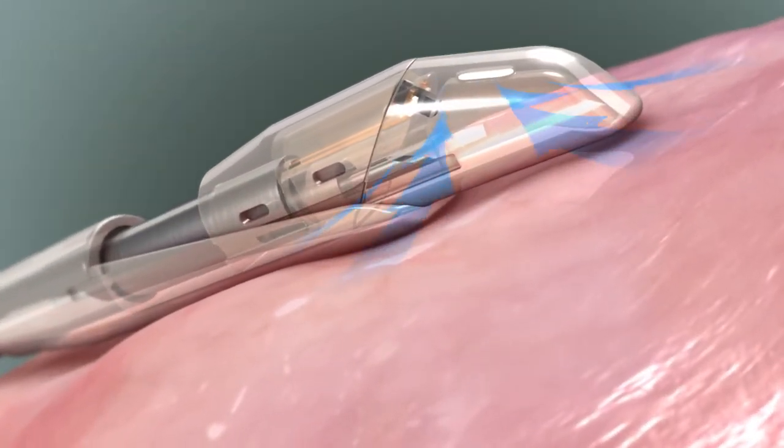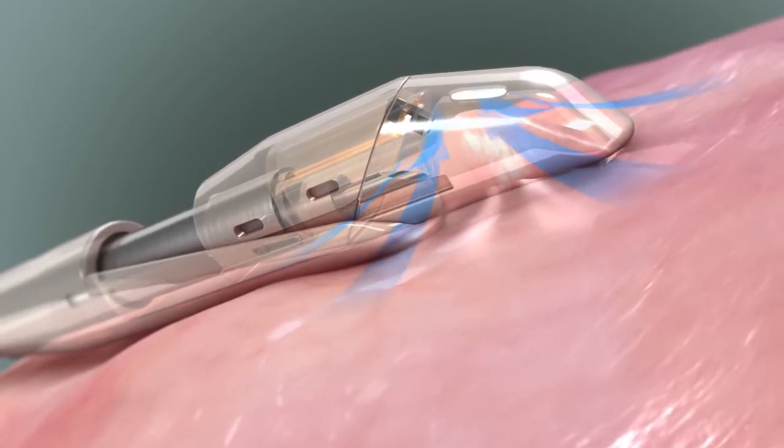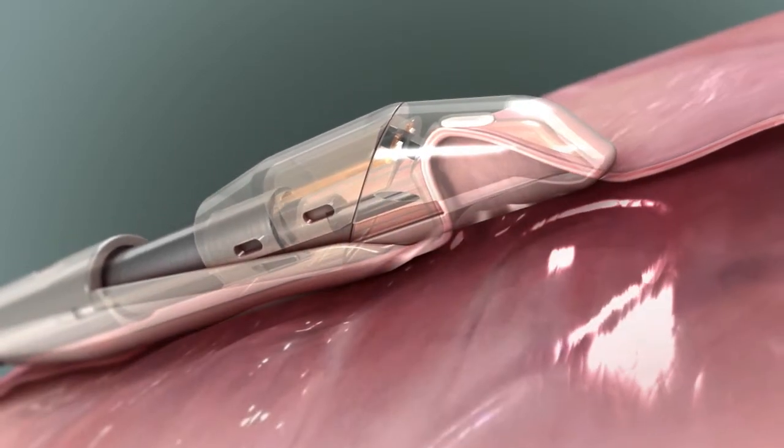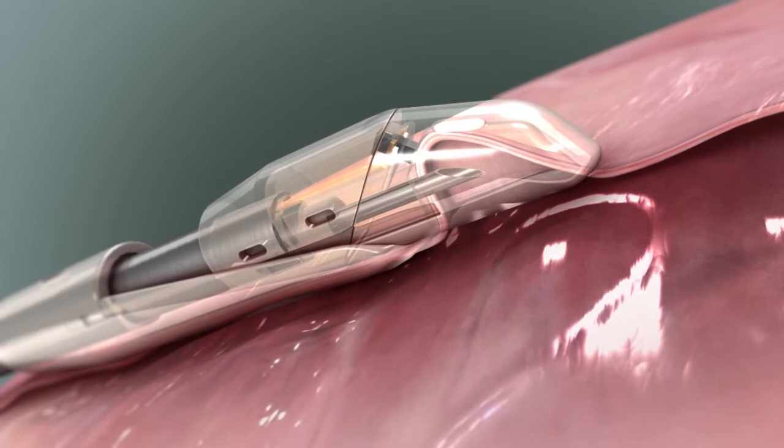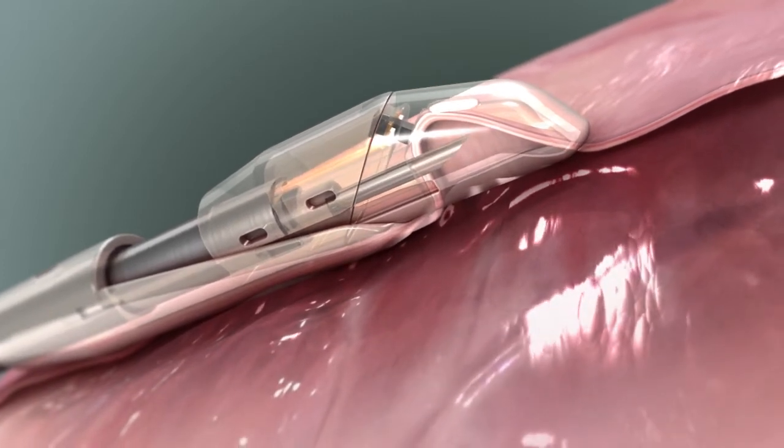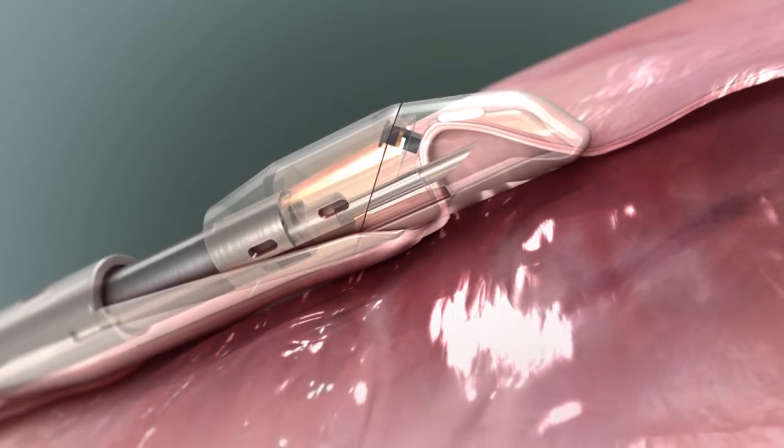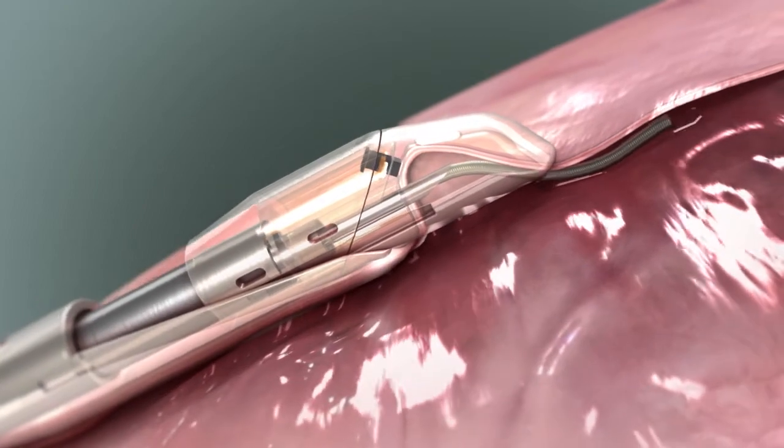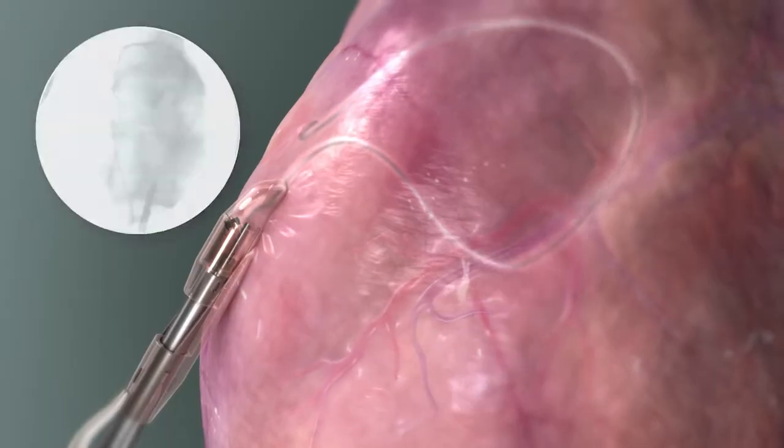Start suction and pull a portion of pericardial tissue into the chamber in the device's tip. Slide the needle forward and puncture the pericardium. Insert the guide wire using fluoroscopy to ensure that the guide wire is in the pericardial space.